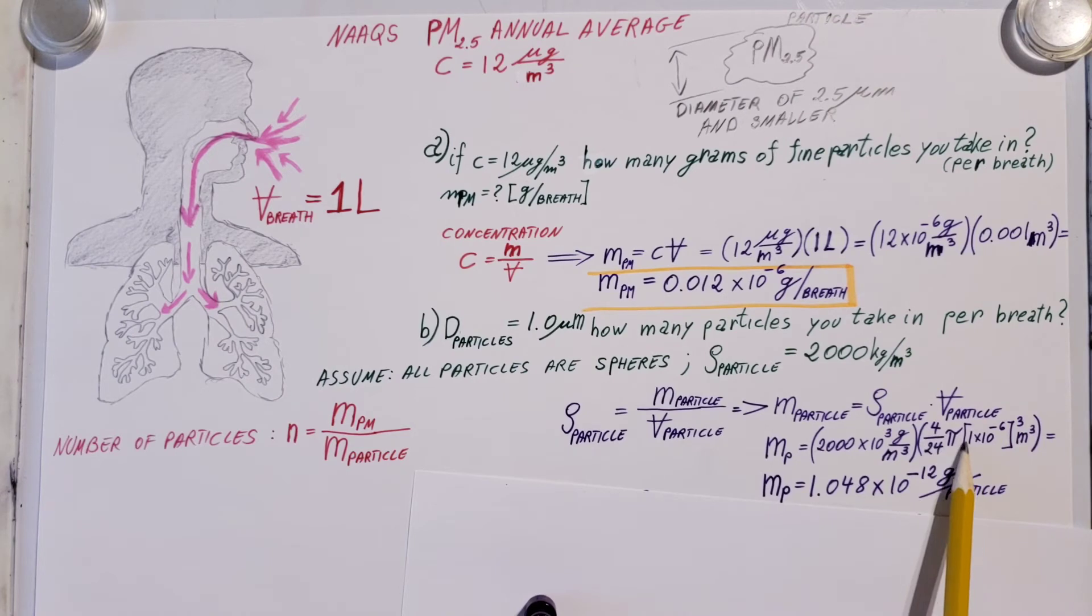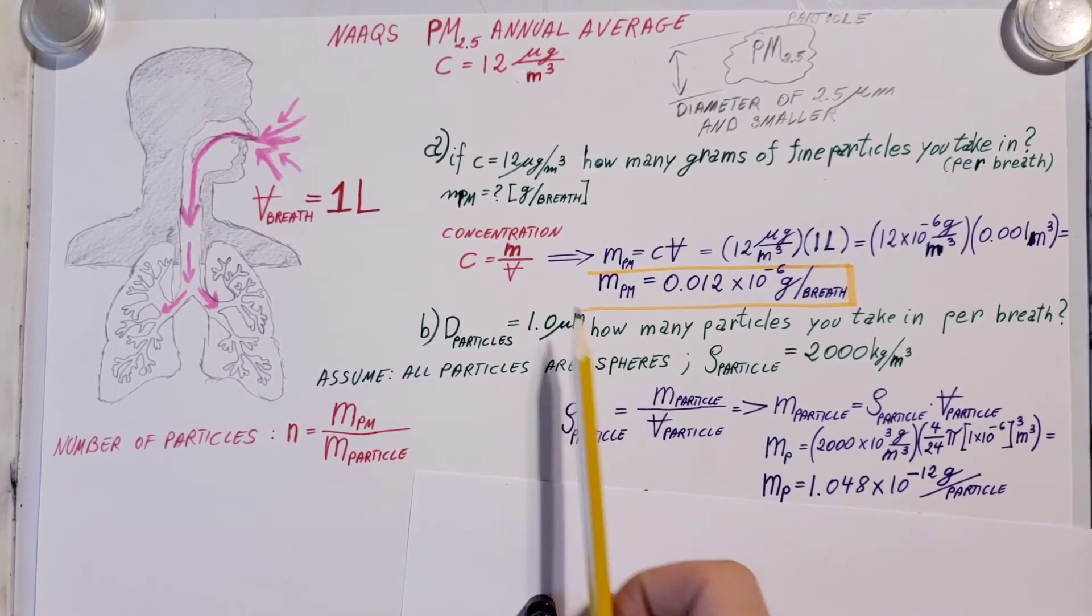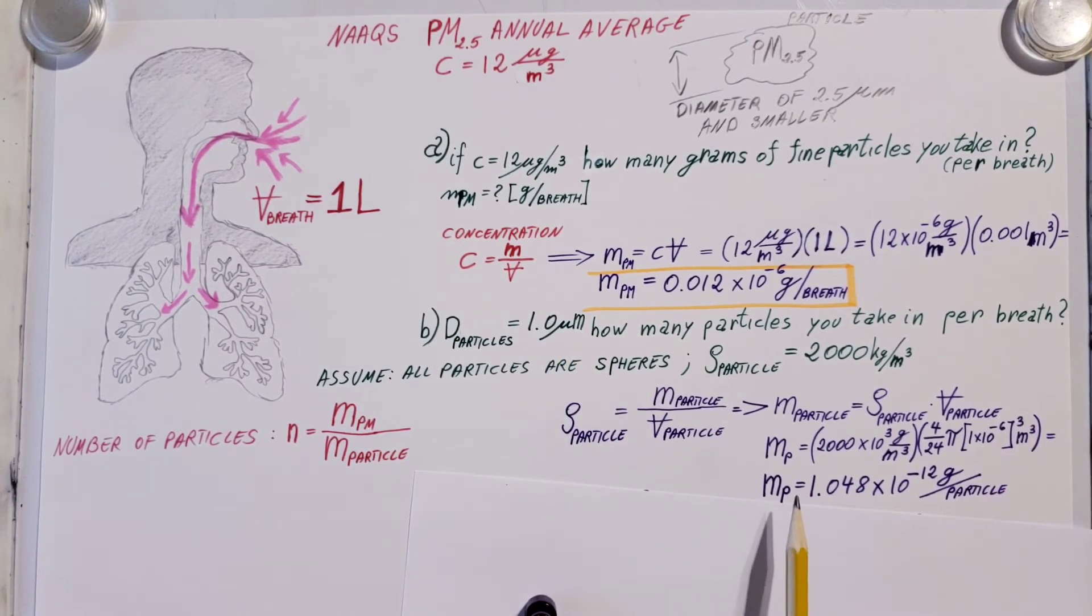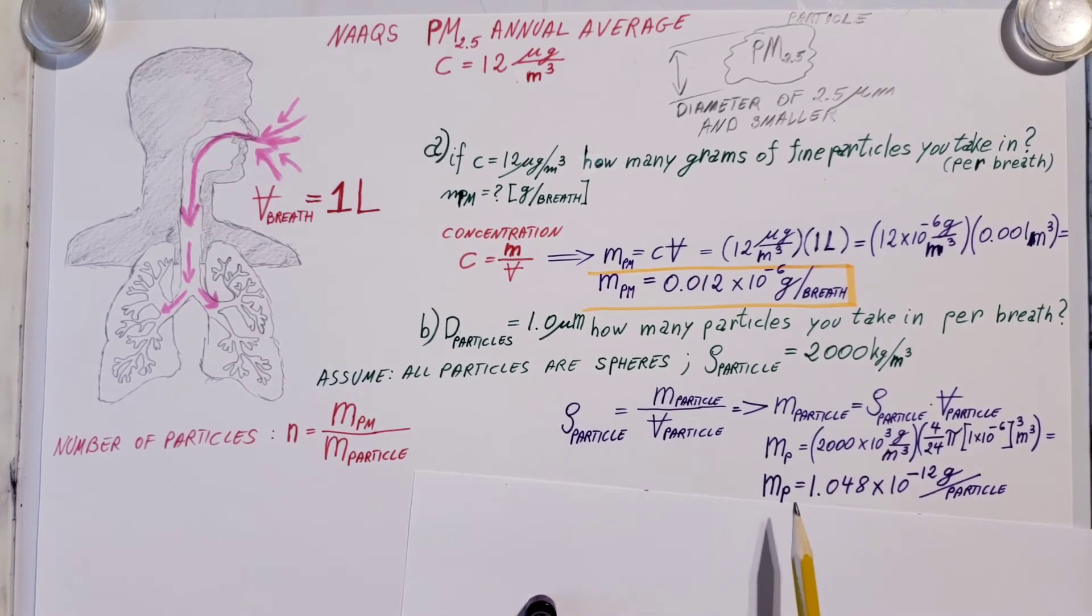We plug that in with our given diameter, one micron, which is one times 10 to the negative six. Calculate it, and we can find that one particle has a mass of 1.048 times 10 to the negative 12 grams per each particle.